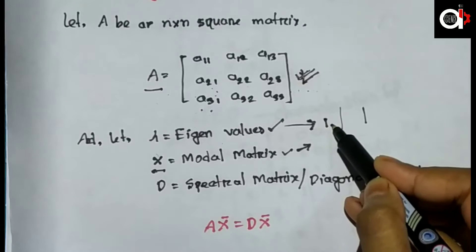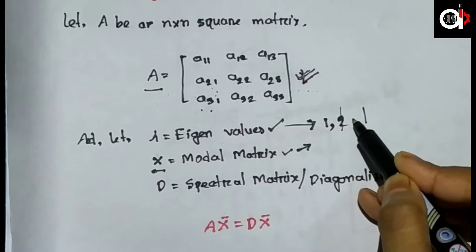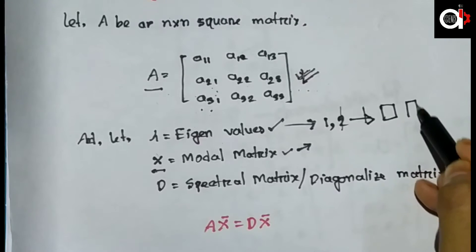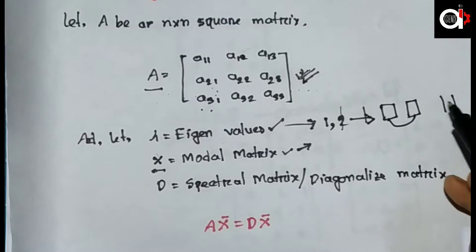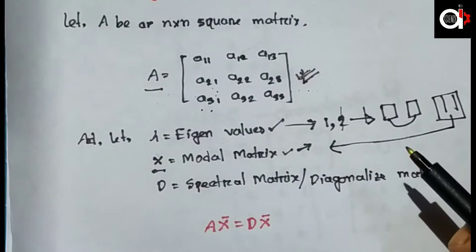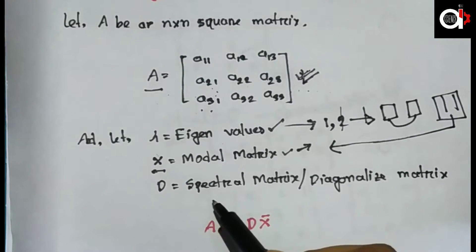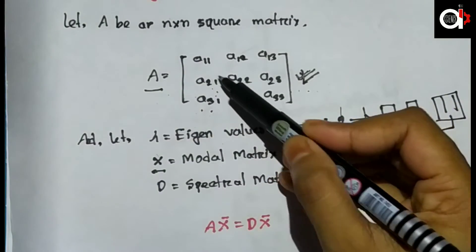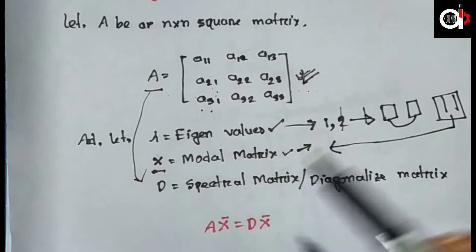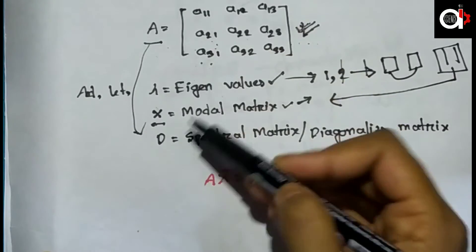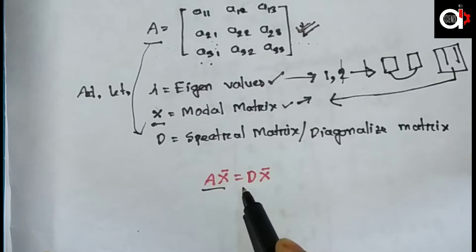The eigenvectors are written as column vectors. D is our spectral matrix, also called the diagonalized matrix. D is the same as the spectral matrix.